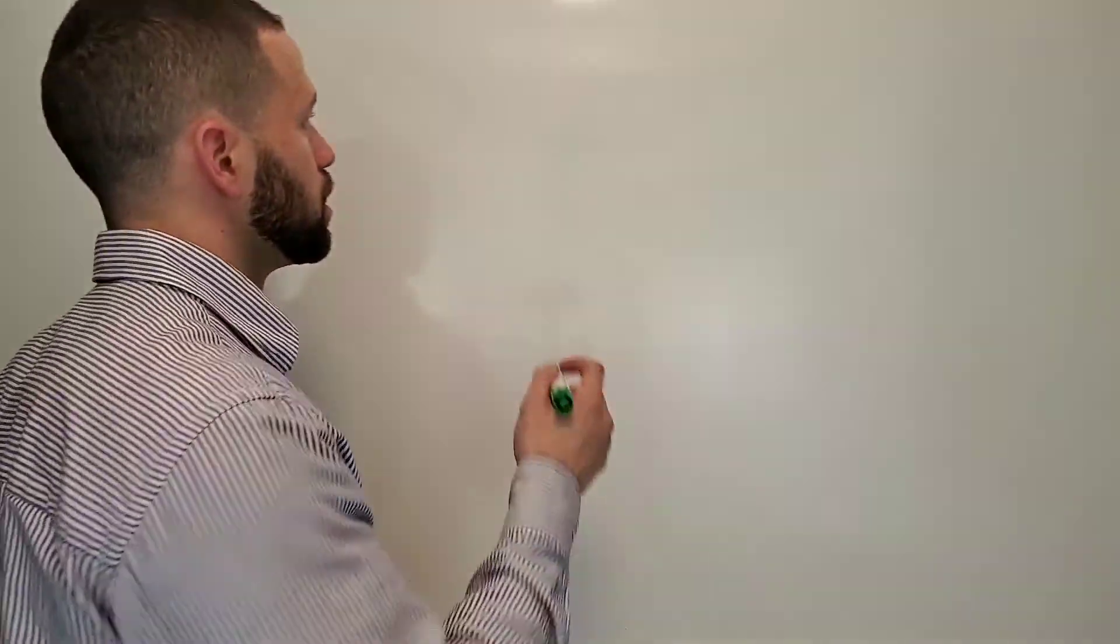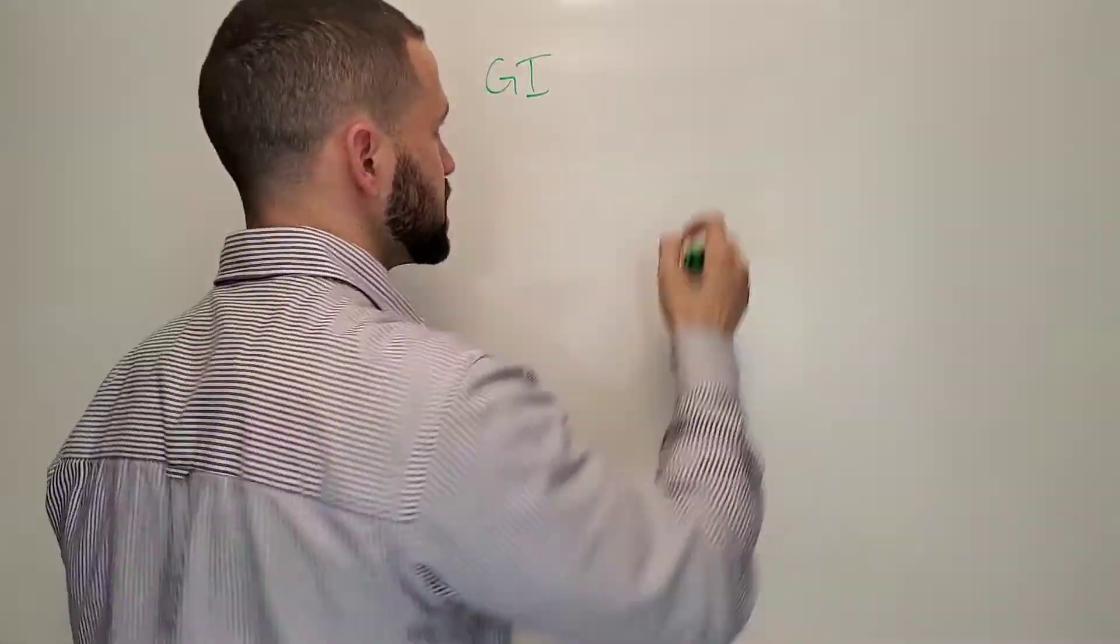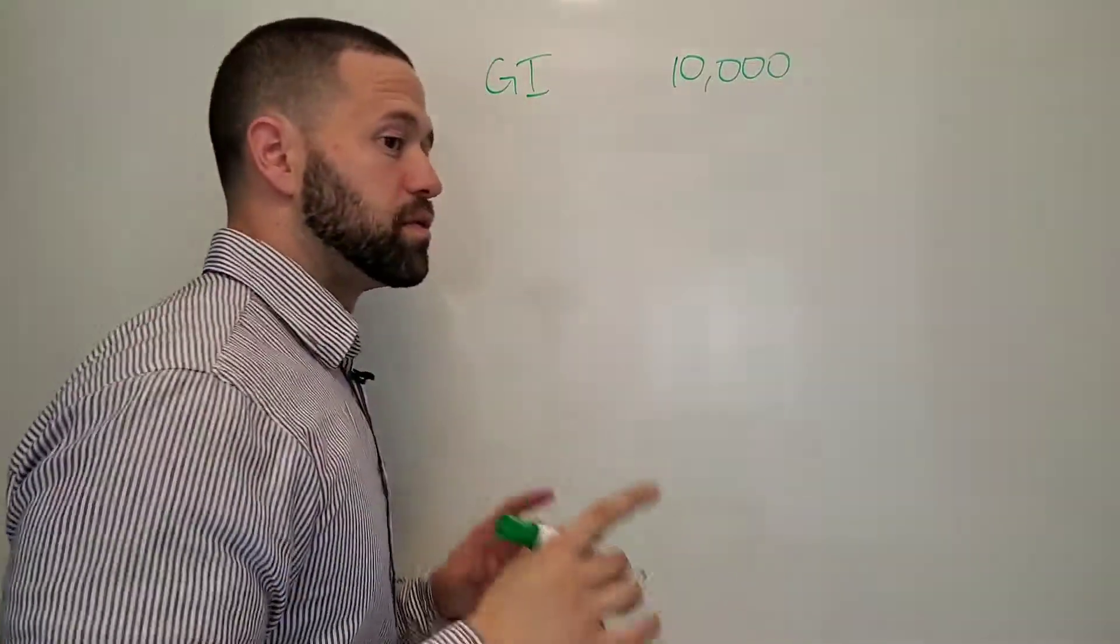I'm going to walk you through a calculation that's very simple. This is what lenders are going to do when they're trying to qualify you for the purchase of a property with a loan. First number, they're going to take your gross income. For round numbers, let's just say it's $10,000 per month. That's your gross income before taxes.